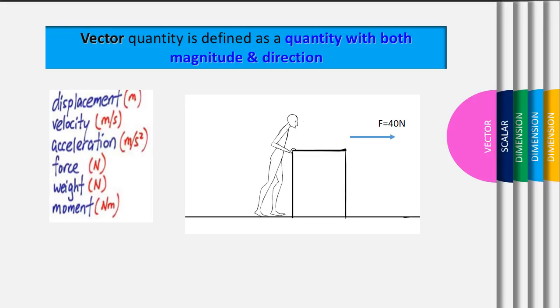When you push an object, you apply some certain magnitude of force towards some certain direction. It has both magnitude and direction. When it has both magnitude and direction, this quantity we consider as a vector quantity.